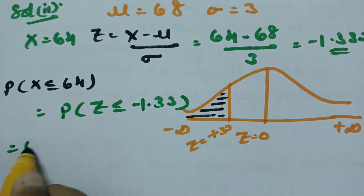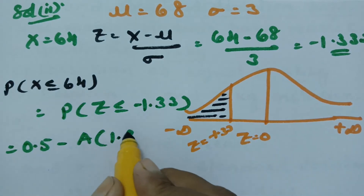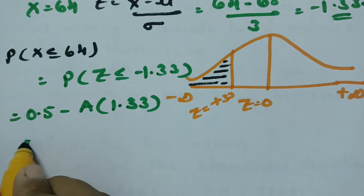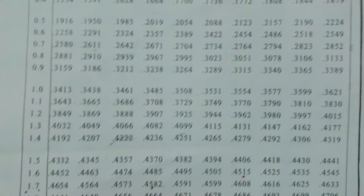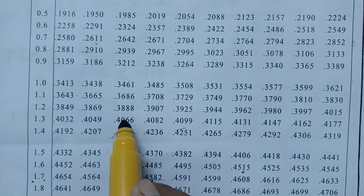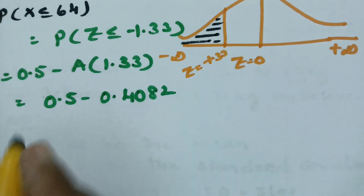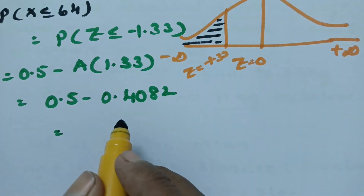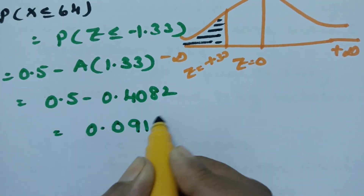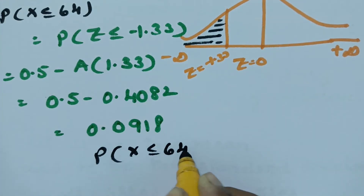By symmetry we can use the positive value 1.33. So this is 0.5 minus the area from 0 to 1.33, which is 0.5 minus 0.4082, giving 0.0918. Therefore the probability of x less than or equal to 64 is 0.0918.